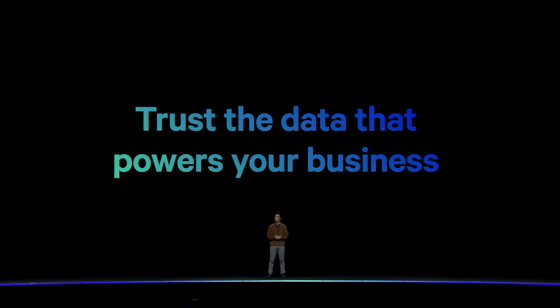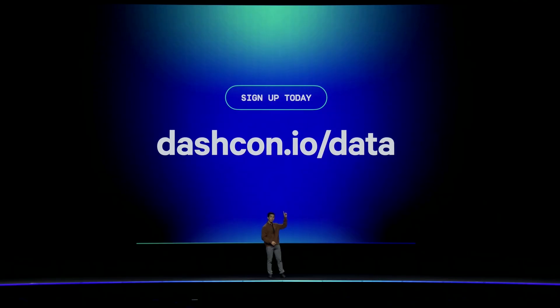Datadog Data Observability helps companies like RAMP, JustWorks, and Glassdoor trust the data that powers their businesses. And if you want that same level of confidence in your data, you can sign up for the preview today, or visit us at our booth to learn more. Thank you.